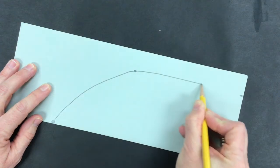Now I'm gonna draw a curved line from the first dot to the second dot, and a straight line from the second dot to the third dot.